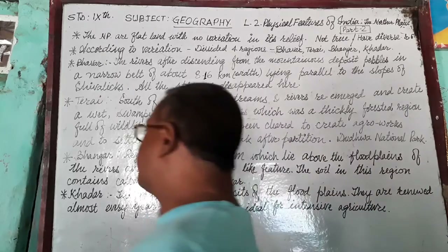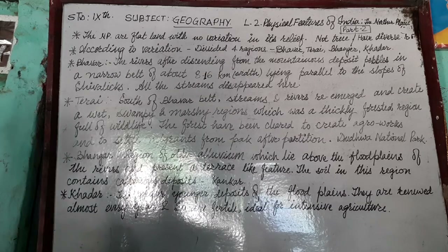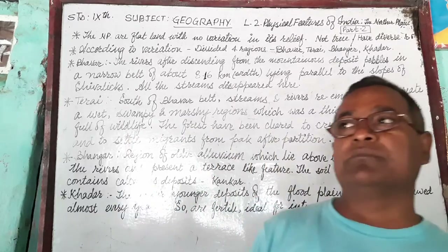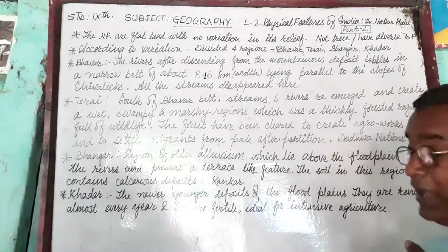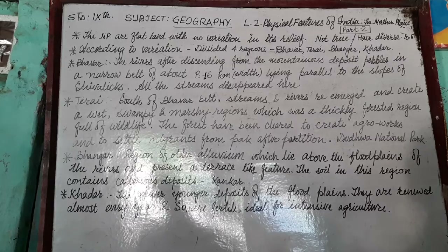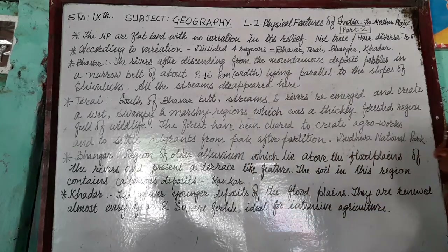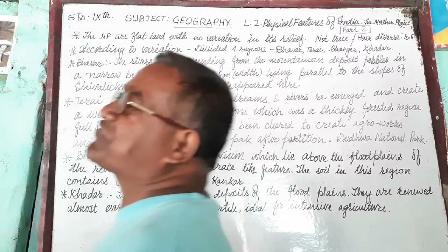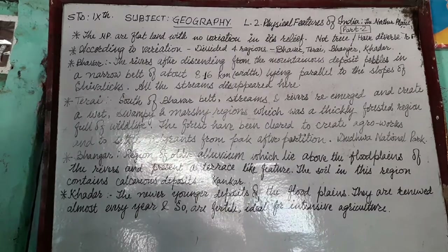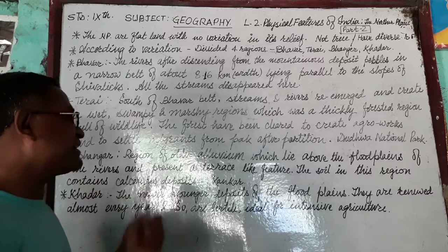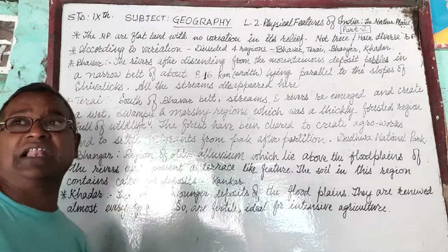After Tarahi comes Bangar. Bangar is the region consisting of old alluvium — pebbles and fine particles carried by rivers in earlier times. Above the flood plain, these depositions create terrace-like structures. The soil in this region contains calcareous deposits called kankar nodules, which are found abundantly in this soil.